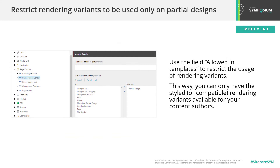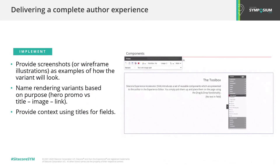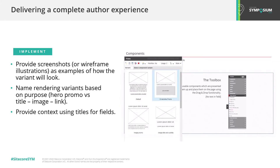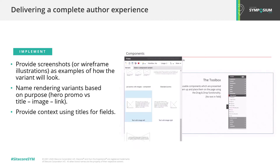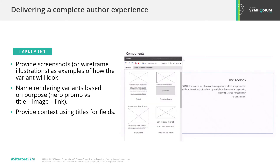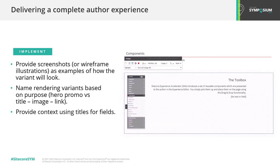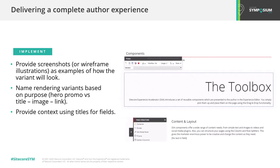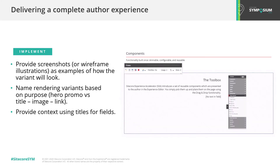Did you know you can restrict renderings to only be used on certain pages or partial designs? If you click on your rendering variant in the Content Editor, you can select the allowed partial designs in the 'Allowed in Templates' field. This ensures only your styled rendering variants can be used by authors and helps limit their options. While authors will learn how to work with the solution over time, you can aid this immensely by naming variants based on the scenarios where they should be used — for example, 'Hero Product Teaser' over 'Image with Title and Description.' Providing a preview thumbnail in the variant's Appearance section will go a long way.